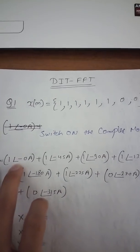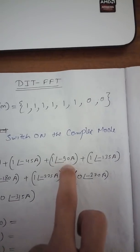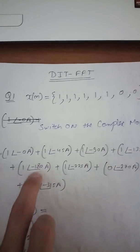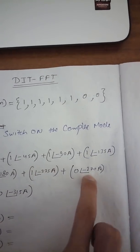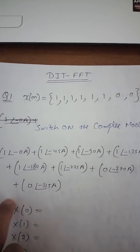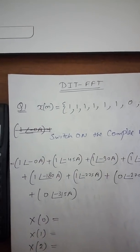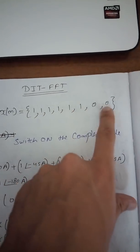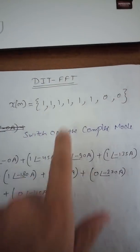Now we have to feed the sequence into the calculator in this form: one angle minus 0 a, one angle minus 45 a, one angle minus 90 a, one angle minus 135 a, one angle minus 180 a, one angle minus 225 a, zero angle minus 270 a, zero angle minus 315 a.